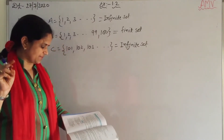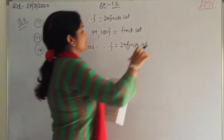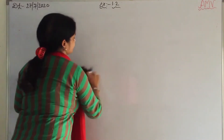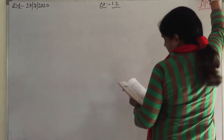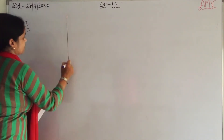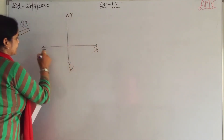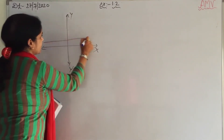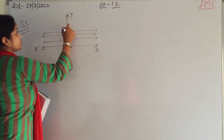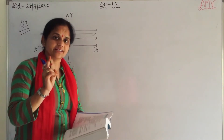Question number 3: state whether each of the following sets is finite or infinite. First: set of lines which are parallel to the x-axis. In a coordinate plane, there can be infinitely many lines parallel to the x-axis — one line here, another line there, and so on. So it is an infinite set.